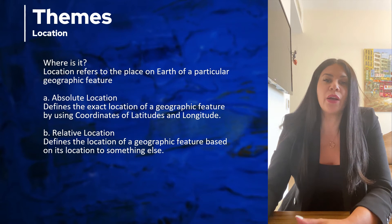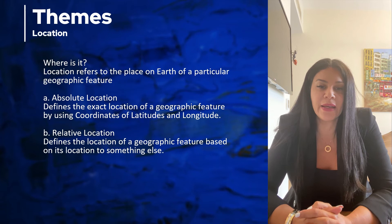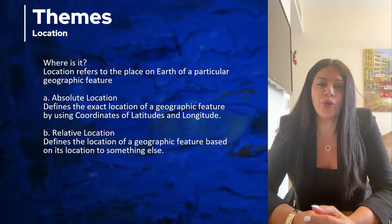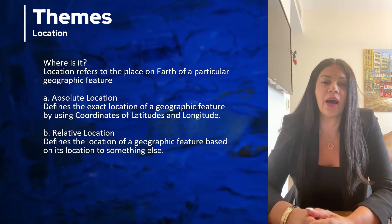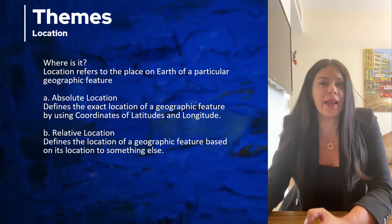The first theme is location, which asks: where is it? How do we know where somewhere is on the earth? Geographers can describe location as either absolute or relative location. An absolute location tells exactly where something is using coordinates of latitude and longitude.